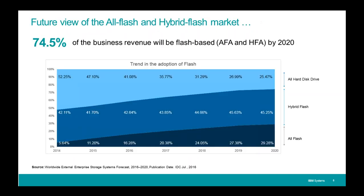We're at a very important time in the history of storage. IBM invented the disk drive back in 1956, and ever since, disk drives have been the king of fast storage. Now flash is starting to take over. An IDC study shows that all-flash will continue to grow, all-hard-drive will continue to drop, and hybrid combinations will become predominant. Based on our projections, 2017 will be the first year we will ship more capacity on flash on the DS8000 than in hard drives.